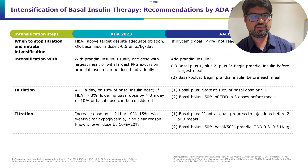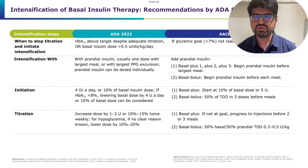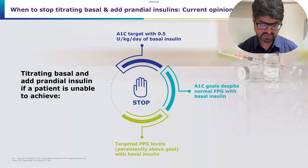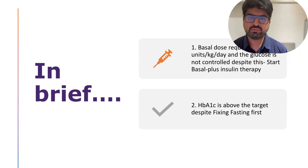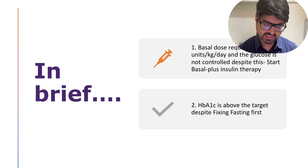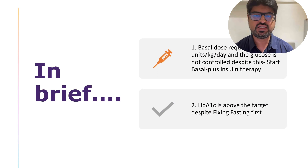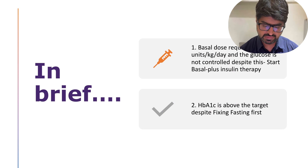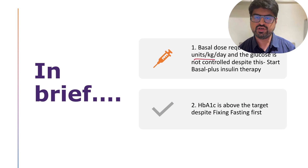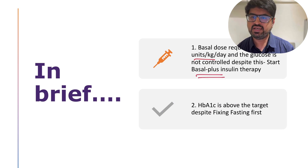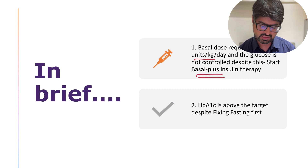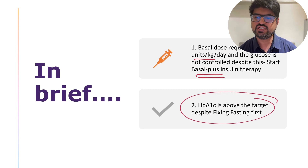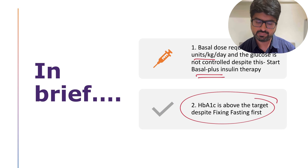When should you consider basal intensification or basal plus therapy? Two key situations: first, if the patient's basal insulin requirement is more than 0.5 units per kg per day and glucose is still not controlled; second, when HbA1c is above target despite Fix Fasting First.